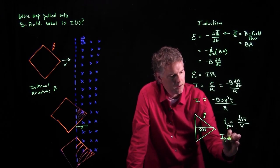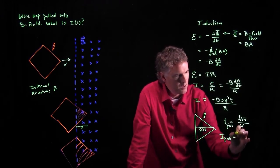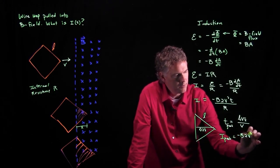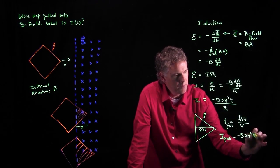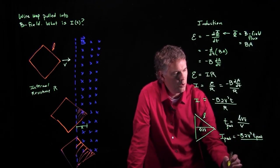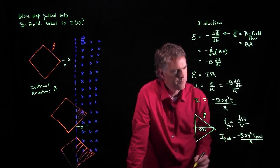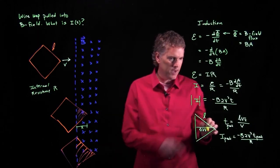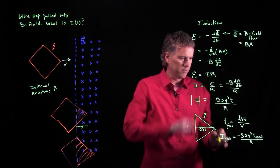And so now you can figure out what the peak current is. I peak is going to be this thing, negative B times 2 times V² times T peak all over R. And let's not worry about the sign.